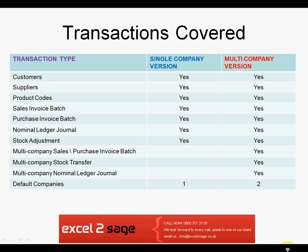So what kind of transactions are covered? It depends on which version of the product you have. In the single company and multi-company versions, you're capable of creating customers, suppliers, and product codes, as well as sales and purchase invoice batches, nominal ledger journals, and stock adjustments. However, in the multi-company version, you're also able to create multi-company or inter-company sales and purchase invoice batches, stock transfers, and nominal ledger journals. The single company version comes with one company by default, but the multi-company version comes with two and further blocks of five.